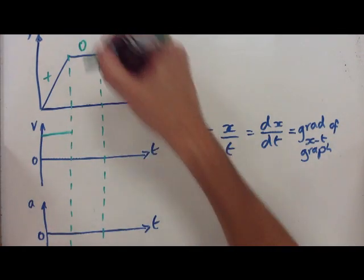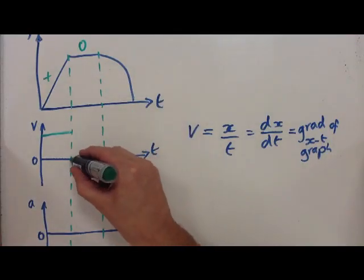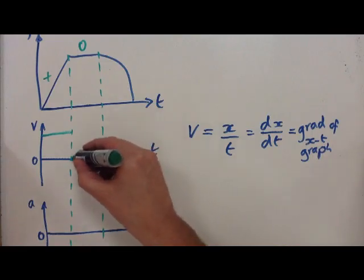Then what happens here? The gradient here is zero. Well, if the gradient is zero, the velocity must be zero. You'll notice at the moment, I'm not trying to connect these lines up at all. I'm just drawing them on as they are, so it's zero, there we go.